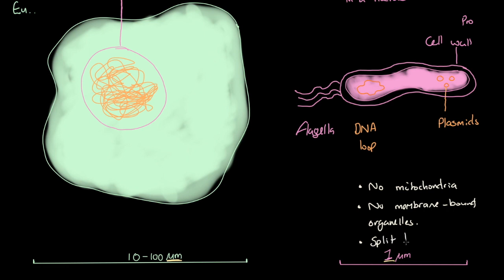Finally, prokaryotic cells divide by a process called binary fission, which means the cell replicates itself and splits in two to produce two daughter cells exactly identical to the mother cell. We will study binary fission in more detail in a practical later in the course.